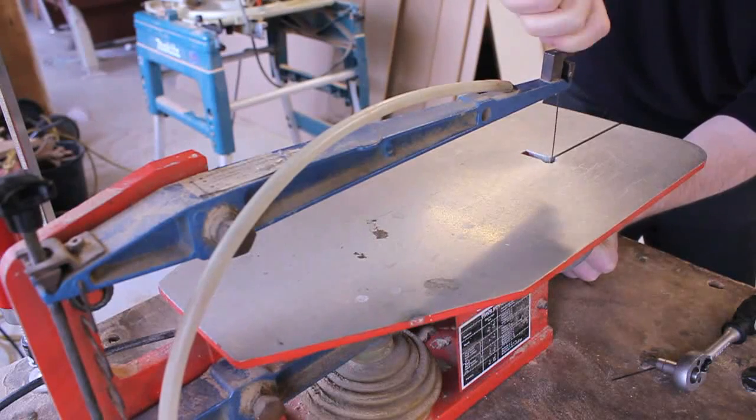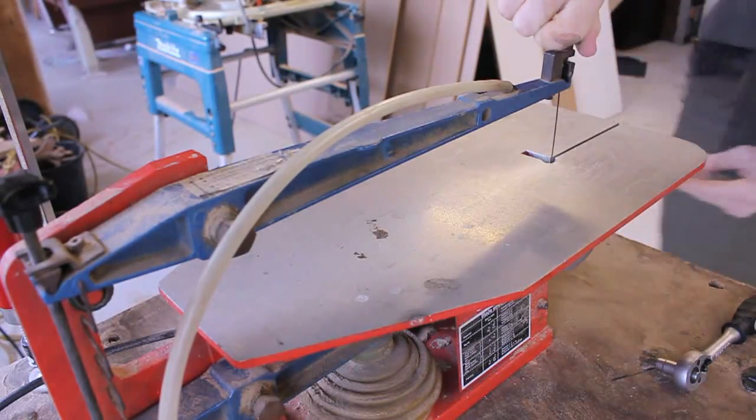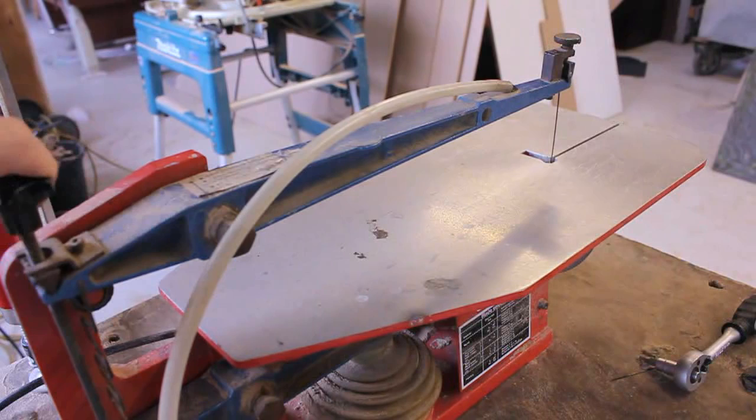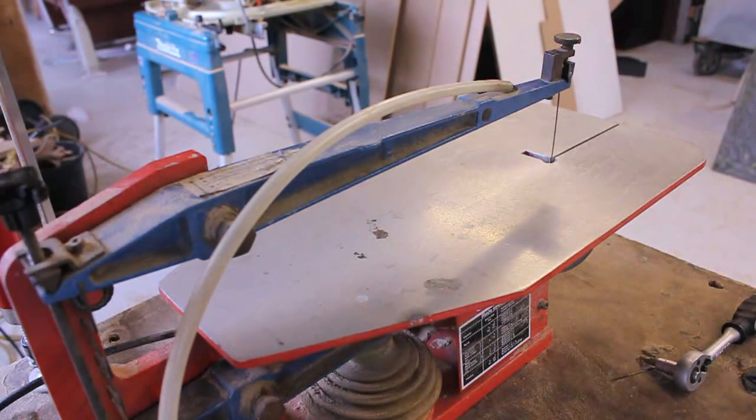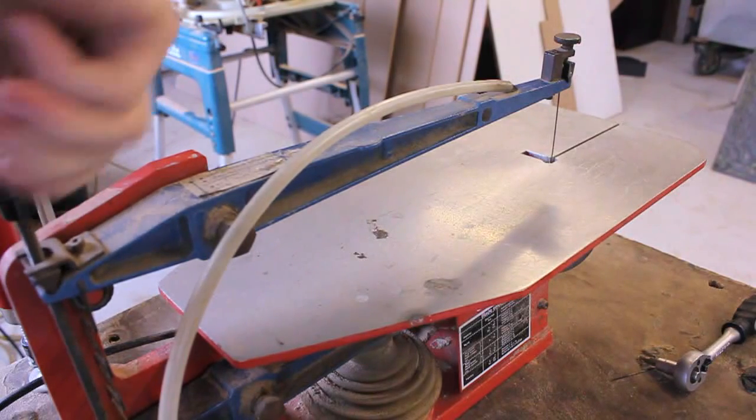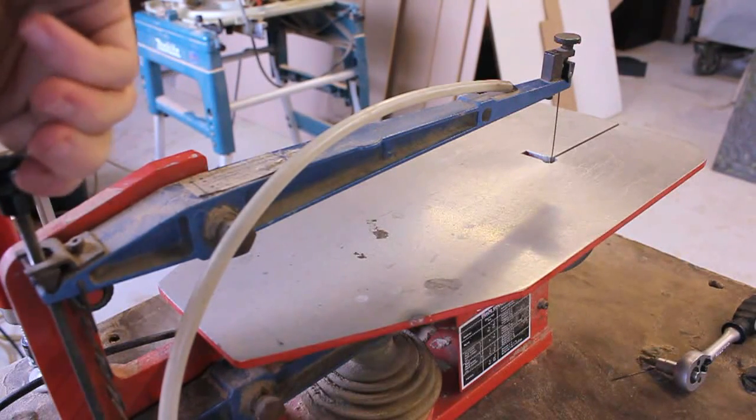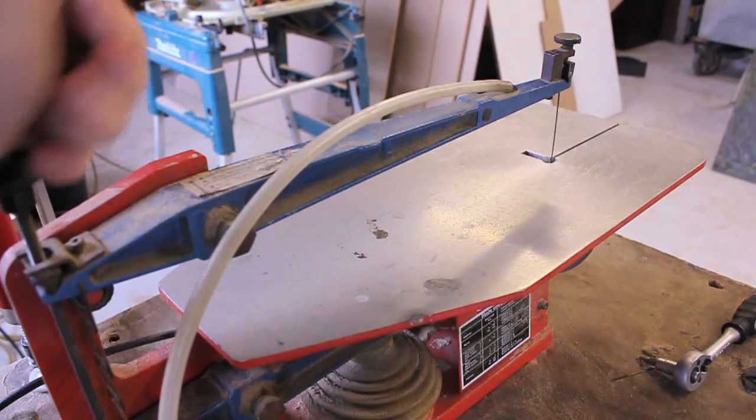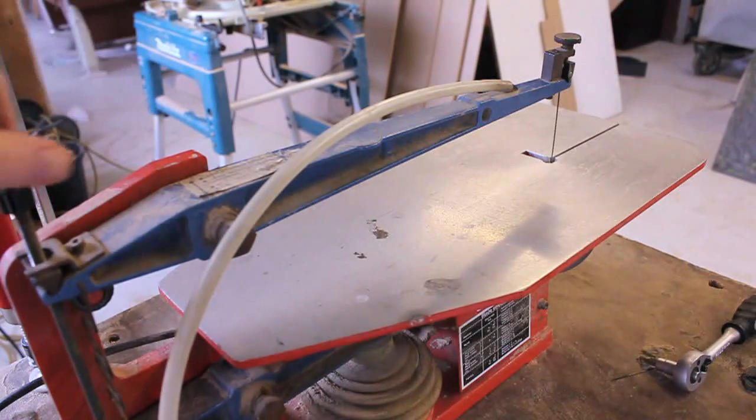When the blade is seated properly at the top and bottom tighten up the thumb screw and then you'll need to tension the blade. To do this tighten the tensioning handle by turning it clockwise and then pluck the blade like a guitar string. As you pluck continue to tighten until the pitch raises. When the pitch doesn't rise any more stop tightening.